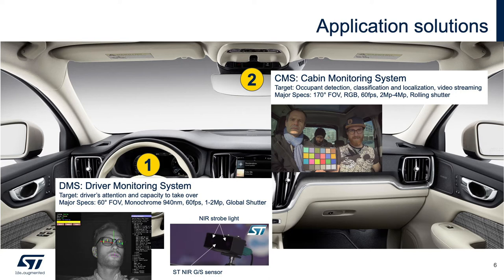Depending upon the software, the cabin monitor can classify the occupants and classify objects. So you could say he left his backpack in the backseat, or the dog is in the backseat, or 'I forgot my baby — I better get my baby before I close the door.' All these sorts of things can be done with this software.